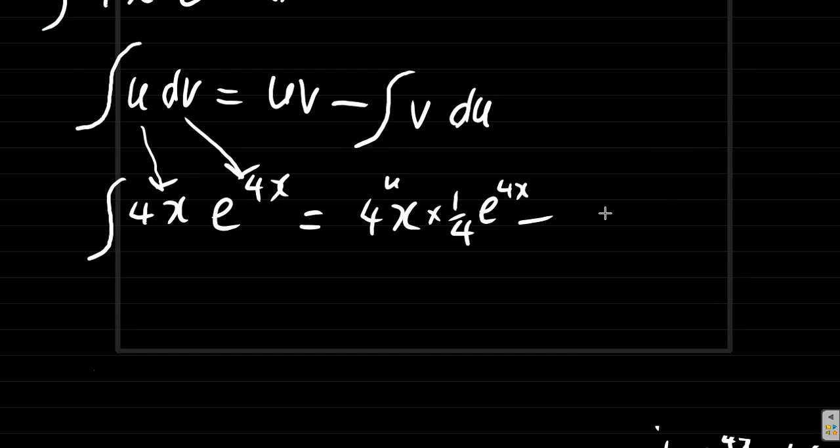So it's minus the integral of v, which is a quarter e to the 4x, times du. u was 4x. By the way, let me make a note: this is u, this is v, this is v again.